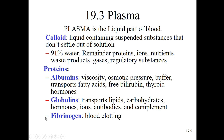Fibrinogen is a blood clotting protein that is in a soluble form — sort of dissolved and invisible within the plasma; you don't know it's there. But you need it to be there, because if you have a cut, this fibrinogen can change its shape and suddenly become an insoluble fibrin thread, which is a very important part of the blood clotting process.